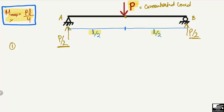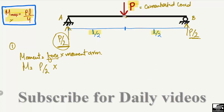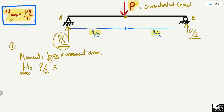In the first method, it is very easy to calculate the maximum moment. The maximum moment will occur at the center of the beam because that is where the load is applied. Moment equals force multiplied by distance, so: M = (P/2) × (L/2), which gives us the maximum moment equal to PL/4.